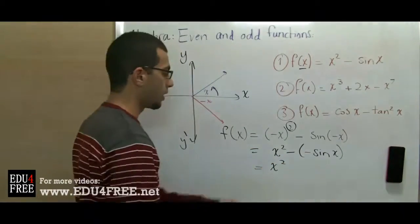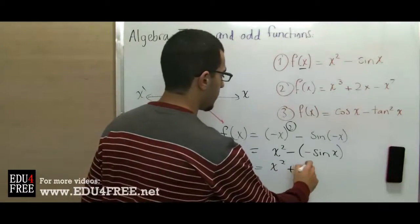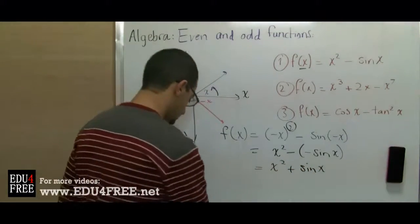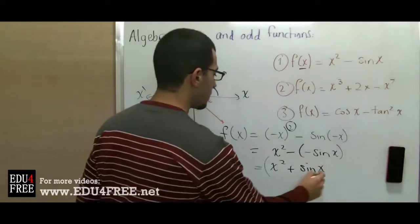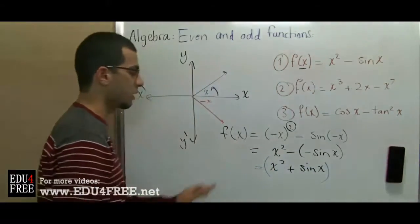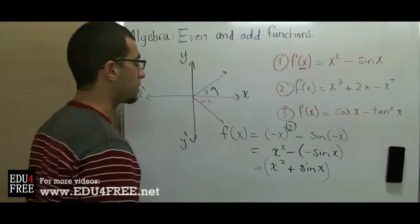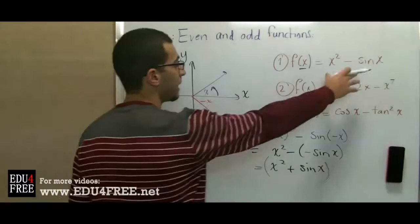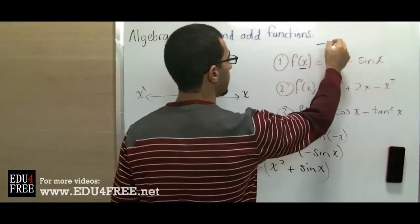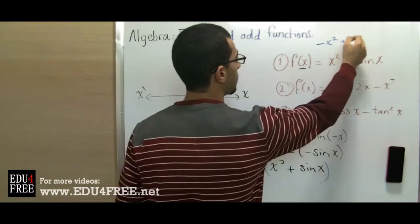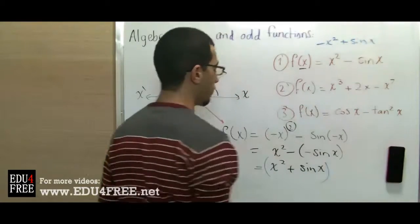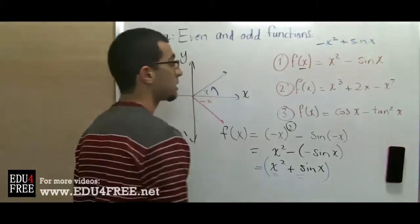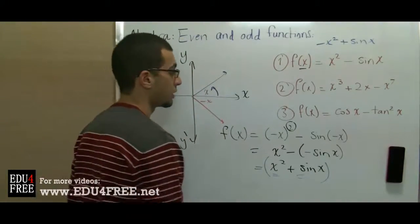We finally have x² + sin(x). This expression is not the same as f(x), so this is not even. And it's not the same as -f(x) either, because -f(x) would give -x² + sin(x), whereas here we have +x² + sin(x). So this is neither even nor odd.